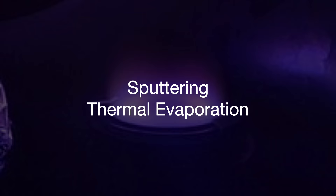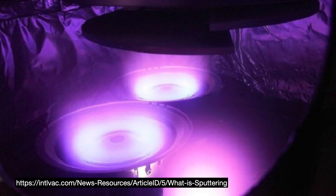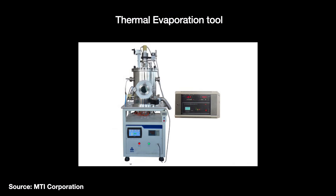In sputtering, we accelerate ions towards a target material like a metal. The impact ejects small particles of the metal which fly out towards the desired location where it accumulates as a thin film. In thermal evaporation, we heat up a material like a metal in a vacuum chamber to its evaporation point — it vaporizes and travels over to the target location where it accumulates as a thin film.